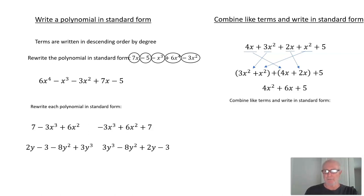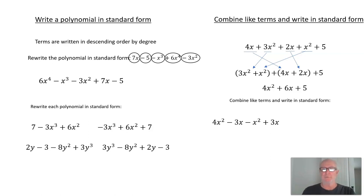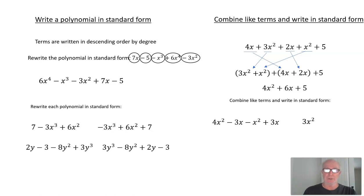Here are some for you to try — combine like terms and write in standard form: 4x² − 3x − x² + 3x. Pause the presentation, put it in standard form, and then resume. 4x² − x² = 3x², and −3x + 3x = 0, so they cancel each other out. The answer is 3x².